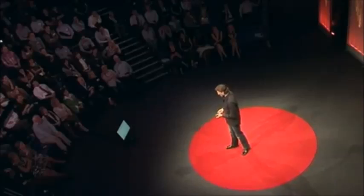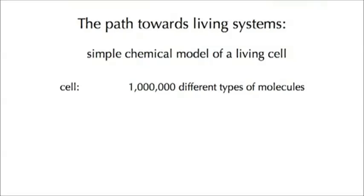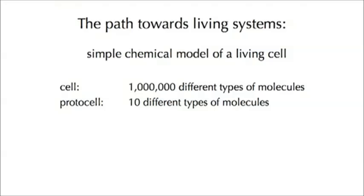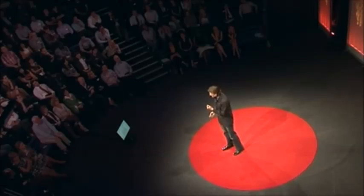We use a model system that we term a protocell — think of this as a kind of primitive cell. It is a simple chemical model of a living cell. A cell in your body may have on the order of millions of different types of molecules that need to come together in a complex network to produce something we call alive. In the laboratory, what we want to do is much the same, but with on the order of tens of different types of molecules — a drastic reduction in complexity, but still trying to produce something that looks lifelike. So we start simple and work our way up to living systems.